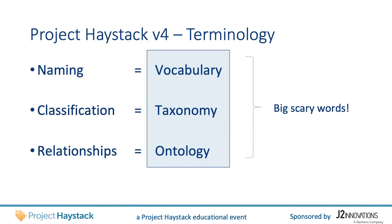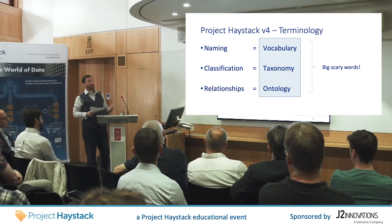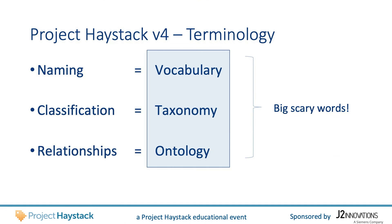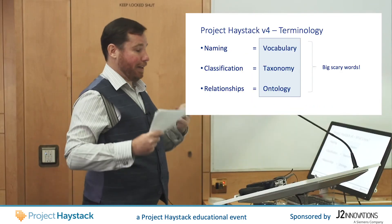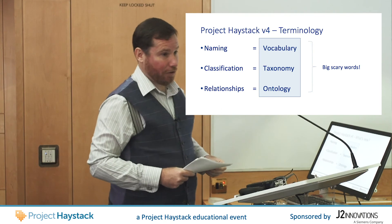The method for defining such relationships is a lot more flexible in Haystack than what you'll find in other classification systems. To keep things simple in this talk, I've used the words naming, classification, and relationships. But if you look at the official Project Haystack documentation or other classification systems, you're going to see words like vocabulary, taxonomy, and ontology. These are big words, they're quite unnecessary, and they mean exactly as I have described. Don't be scared by them when reading other documentation.